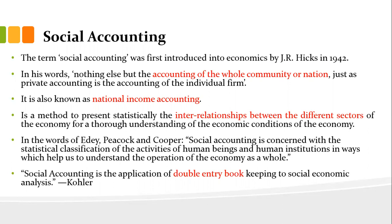Social accounting shows the interrelation between different sectors of the economy. There are primary, secondary, and tertiary sectors, as well as consumers who consume products. Some products we manufacture, some we export, and some we import. There is a government sector, an industrial sector, and foreign companies. Social accounting shows how these sectors relate to each other and how they supply and demand goods.